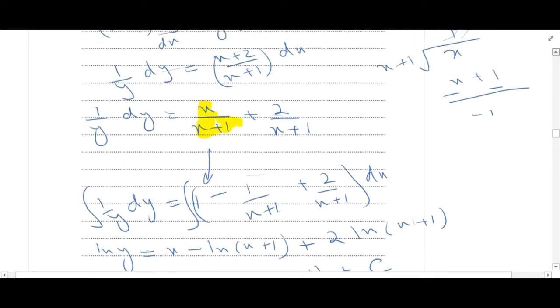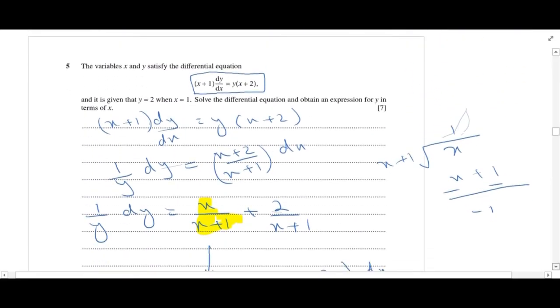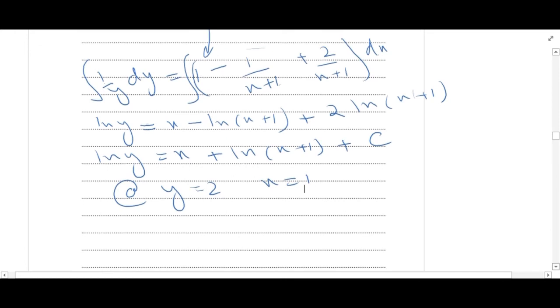Now, the initial condition was when y was equal to 2, x was equal to 1. So, at y equals 2, x equals 1. I'll put this in the initial conditions.